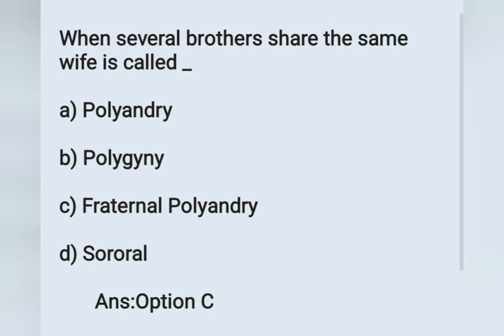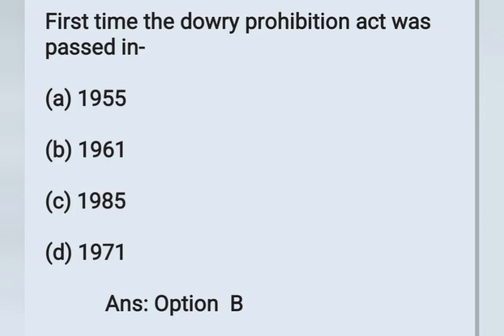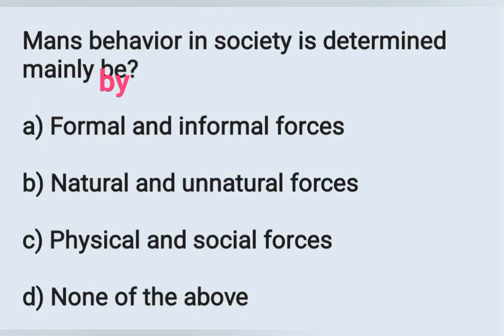The next question: the Dowry Prohibition Act was first passed in — Options: A) 1955, B) 1961, C) 1985, D) 1971. The Dowry Prohibition Act was passed in India on 1st May 1961. Option B is the correct answer.